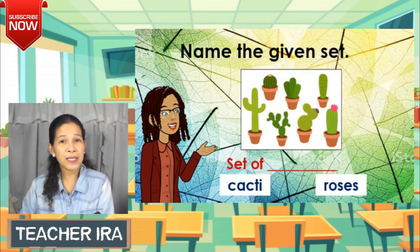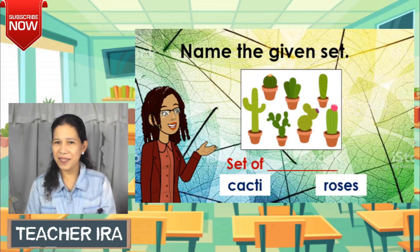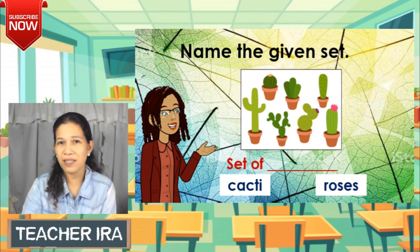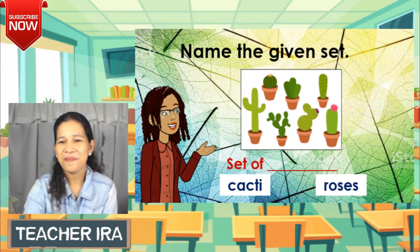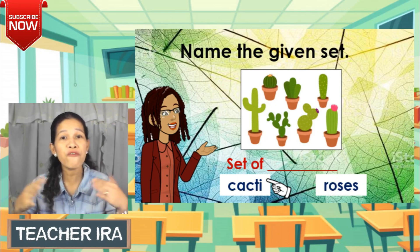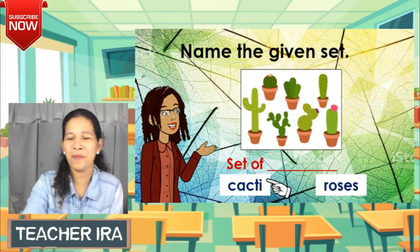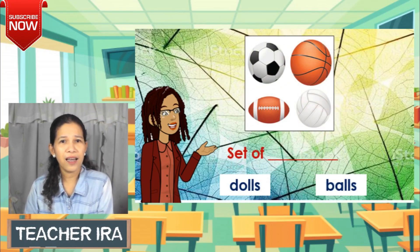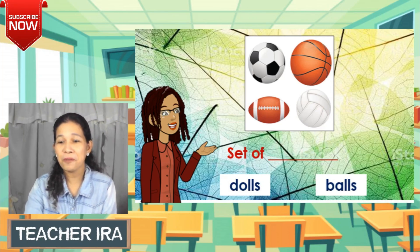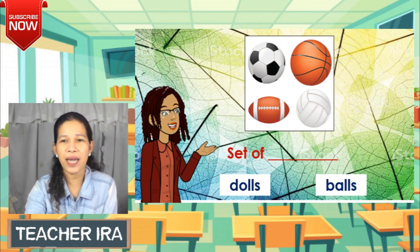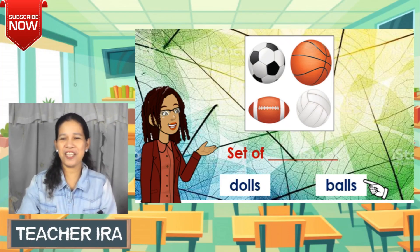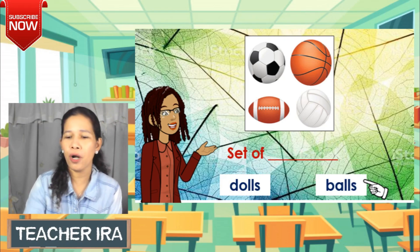Now I have some examples and I want you to name the sets. Do you see a set of cacti or a set of roses? The answer is set of cacti. Remember, if it's just one you say cactus, but if you have many you say cacti. Next, what about these — set of dolls or set of balls? The answer is set of balls. Great job!